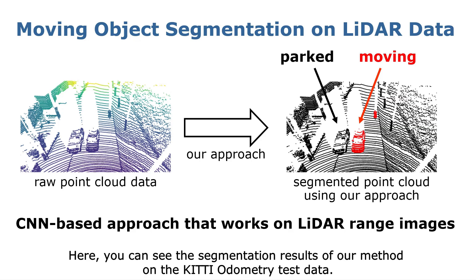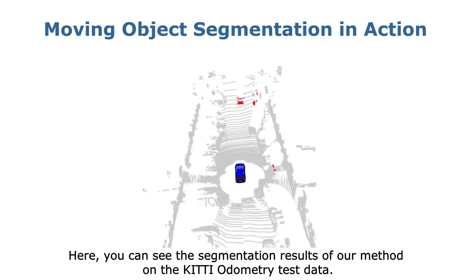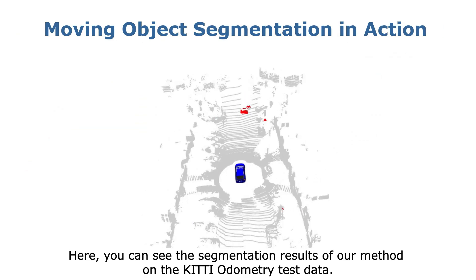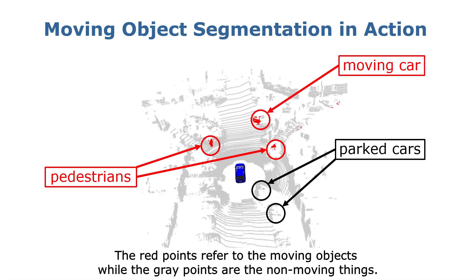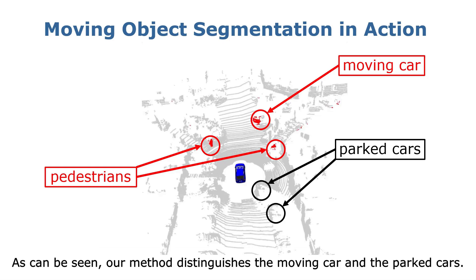Here you can see the segmentation results of our method on the KITTI Odometry test data. The red points refer to the moving objects while the gray points are the non-moving things. As can be seen, our method distinguishes the moving car from the parked cars.